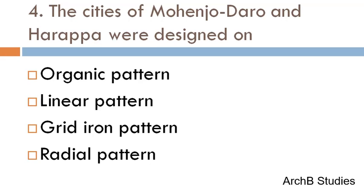The cities of Mohenjo-daro and Harappa were designed on which pattern — organic pattern, linear pattern, grid-iron pattern, or radial pattern?